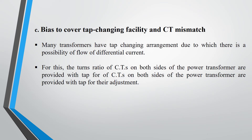The third consideration is bias to cover tap changing facility. We know that some transformers have a tap changing arrangement so that voltage control can take place. In this, the turn ratio of the CT on both sides of the power transformer is also provided with a tap to get adjusted with the tap setting arrangement of the transformer.